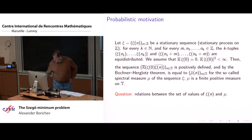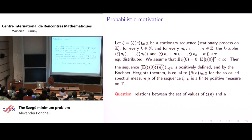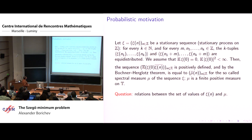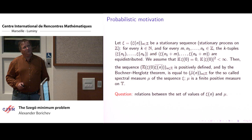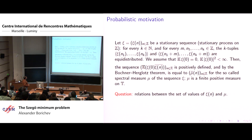A probabilistic motivation was important for us in considering this problem. Let's start with a stationary process on the integers. For us, this will mean that for every k and for every integers m and m_1 up to m_k, we consider two k-tuples, one shifted by m, and they should be equidistributed — for every k, every m, and every collection of indices.